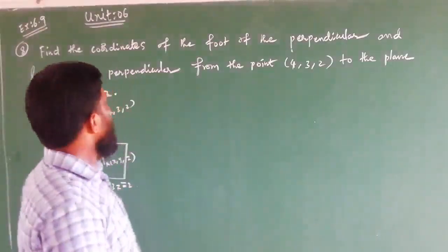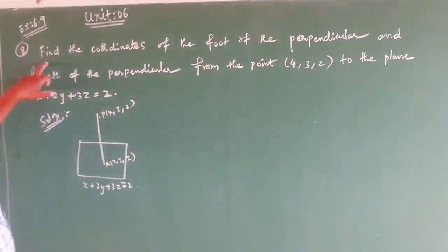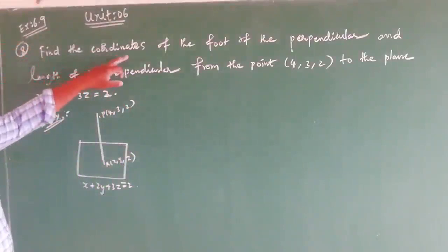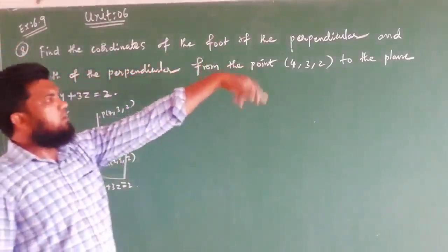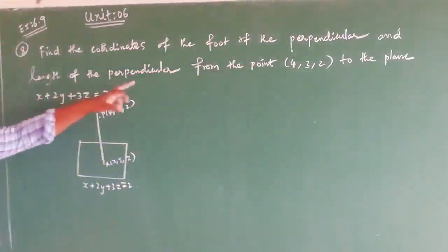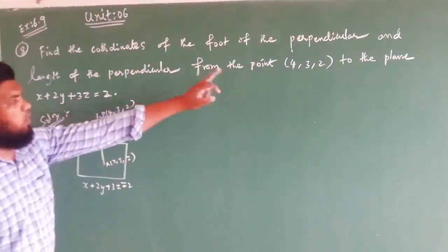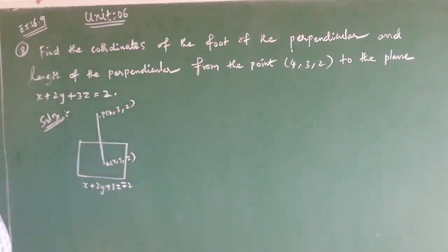In this question, unit number 6, exercise 6.9, 8th sum: find the coordinate of the foot of the perpendicular and the length of the perpendicular from the point (4, 3, 2) to the plane.